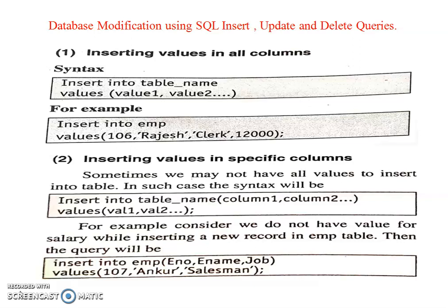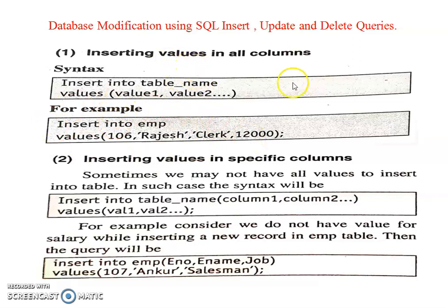So first we discuss how to perform the operation of inserting value in a column. The syntax is: INSERT INTO table_name VALUES (value1, value2). For example, INSERT INTO employee VALUES (106, 'Rajesh', 'class', salary). So it is inserting values in all the columns.